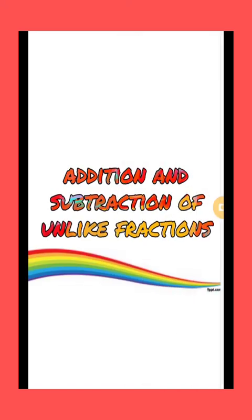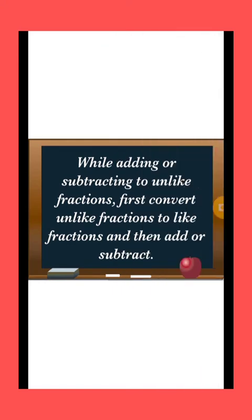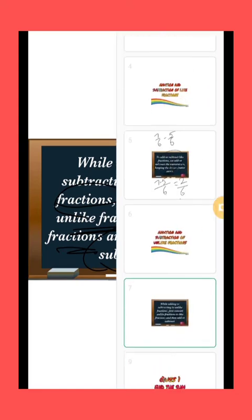Now see how to add and subtract unlike fractions. While adding or subtracting two unlike fractions, first convert unlike fractions to like fractions. Jab bhi hamare paas unlike fraction given hoga aur humein usme addition ya subtraction karni hogi, sabse pehle hum unlike fractions ko like fractions mein convert karenge by taking the LCM of their denominators. Uske baad same procedure follow karenge — add or subtract the numerators and keep the denominator same.